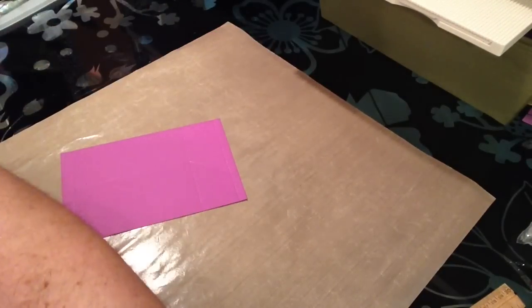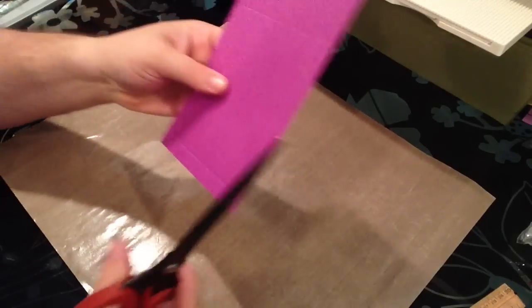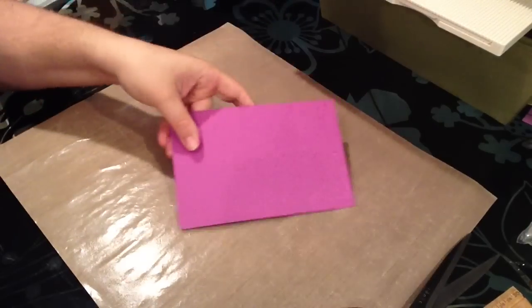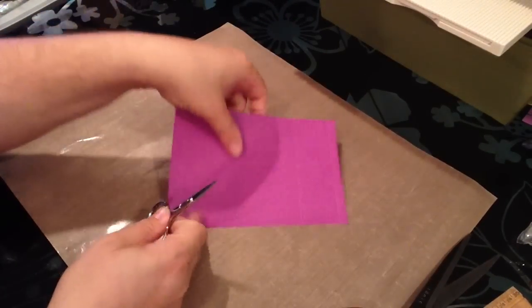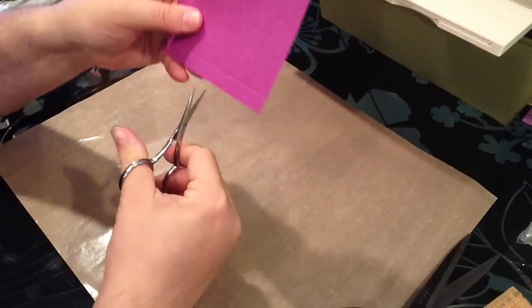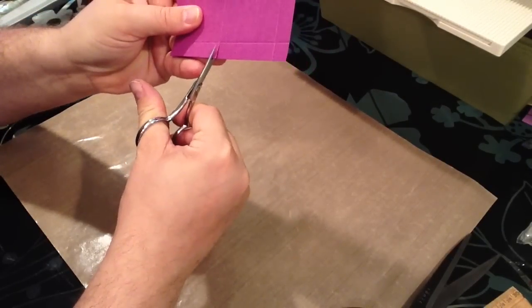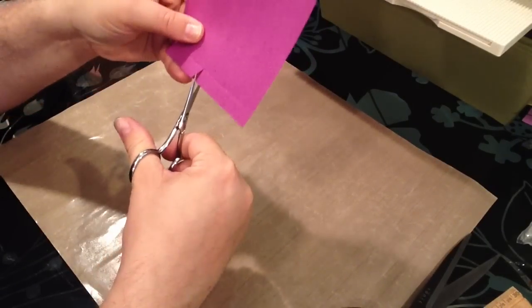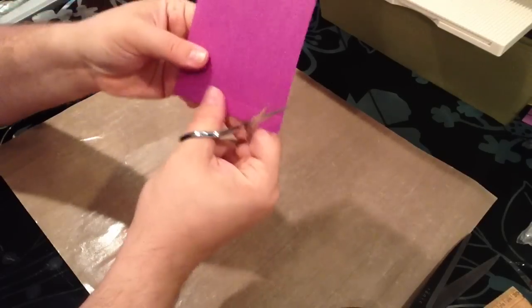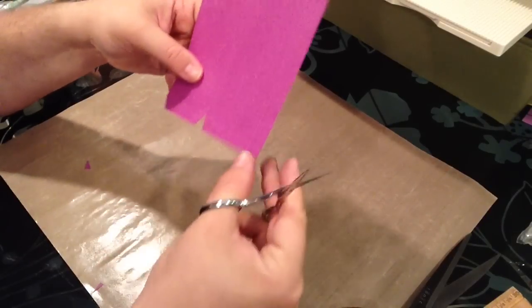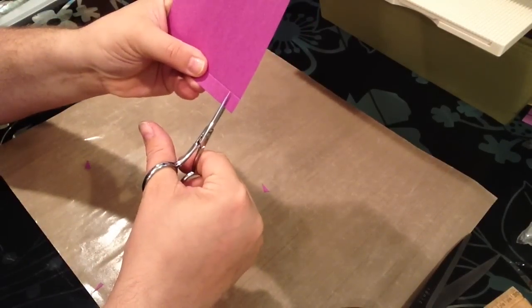I'm going to make a few cutouts here. Along the very bottom here we're going to turn these into tabs. Cut up there and then turn this into a little tab on either side. This is eventually going to be the bottom of the box.